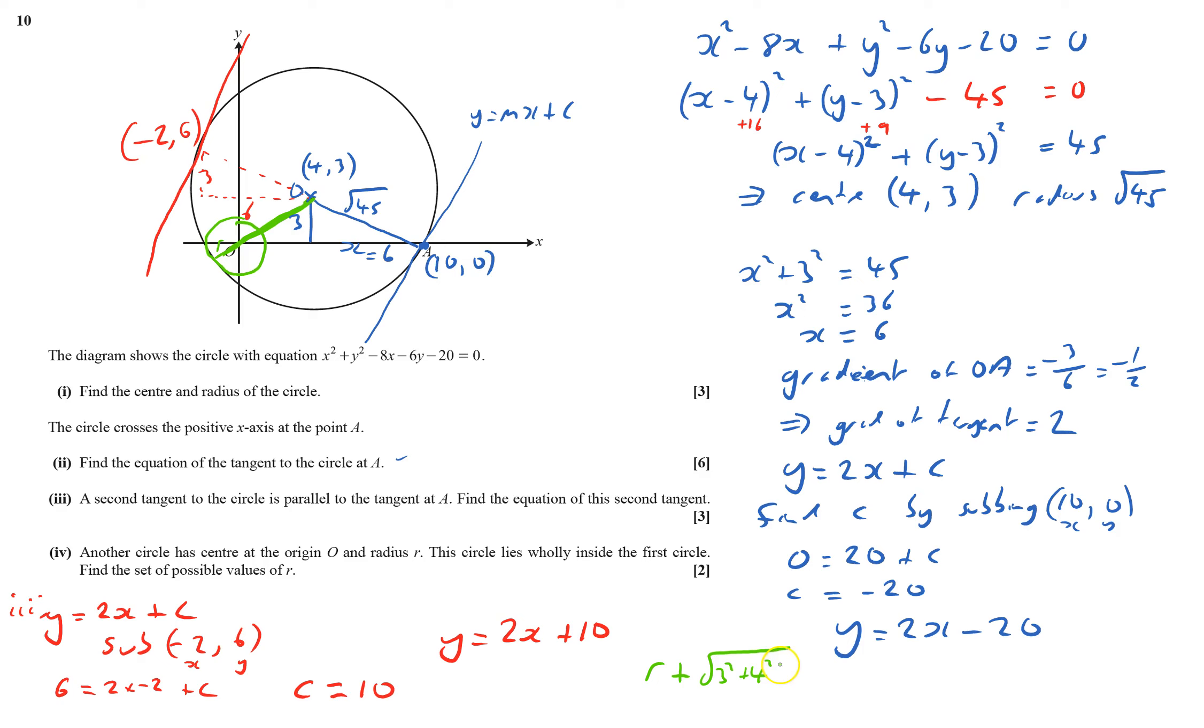r plus this bit—how long is that? That's square root of 3 squared plus 4 squared, which is 5. So r plus 5 has to be less than root 45. Therefore, r will be less than root 45 minus 5, otherwise it will just touch the circle. That's part four done and the whole of question 10 done.